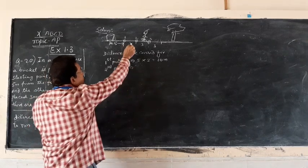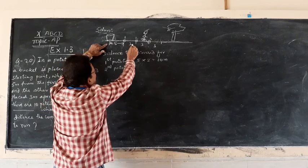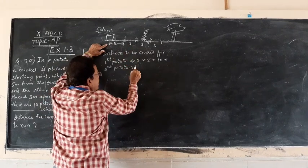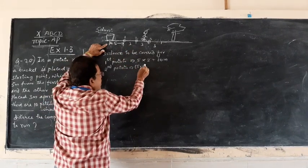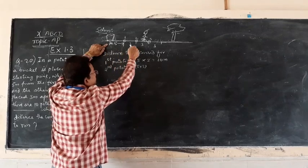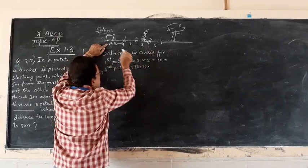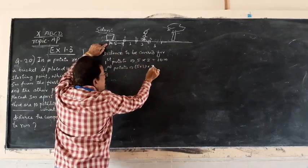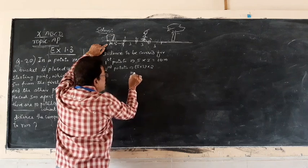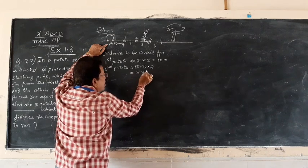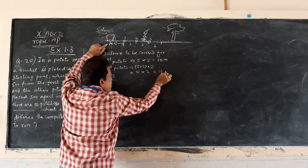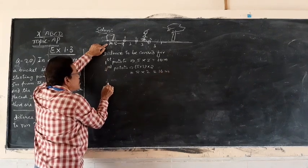For the second potato, it is 3 meters away from the bucket, that means 5 plus 3. He has to cover 2 times, that is into 2, which equals 8 into 2, that is 16 meters.